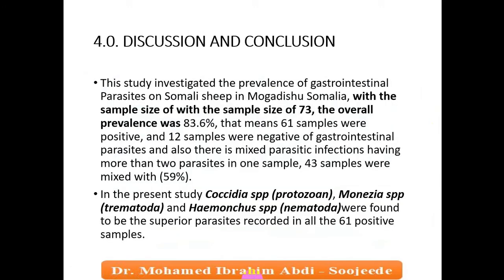In the discussion, this study investigated the prevalence of gastrointestinal parasites in Somali sheep in Mogadishu, Somalia, with a sample size of 73. The overall prevalence was 83.6%, meaning 61 samples were positive and 12 were negative. Mixed parasite infections — more than two parasites per sample — were found in 59% of samples. Coccidia was the most prevalent, followed by Moniezia, then Haemonchus, then Trichostrongylus.